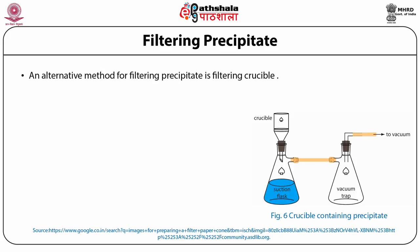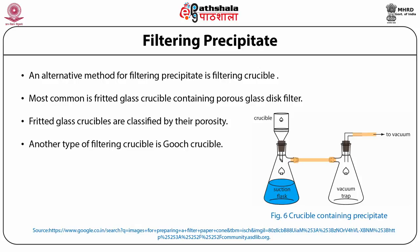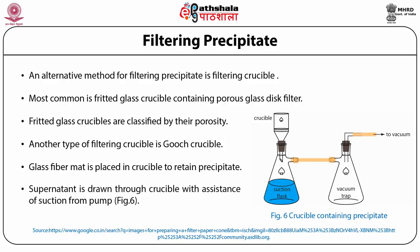An alternative method for filtering is a filtering crucible. The most common is a fritted glass crucible containing a porous glass disc filter, classified by porosity as coarse, medium, and fine. Another type is the Gooch crucible, a porcelain crucible with a perforated bottom, in which a glass fibre mat is placed to retain the precipitate. The supernatant is drawn through the crucible with the assistance of suction from a vacuum aspirator or pump, as shown in figure 6.